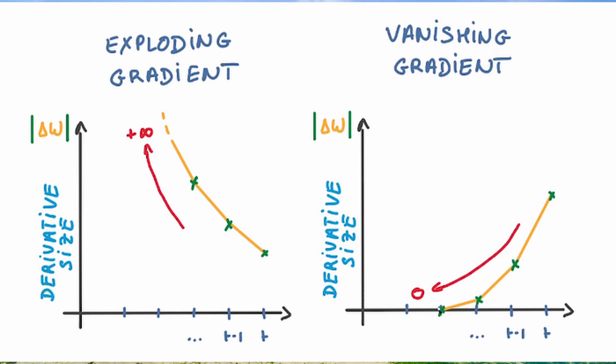In the transformer, due to the self-attention mechanism, every token in a sequence has the potential to directly attend to every other token irrespective of their relative position. This means that the information flow between distant tokens is not constrained by the sequential processing nature seen in RNNs.